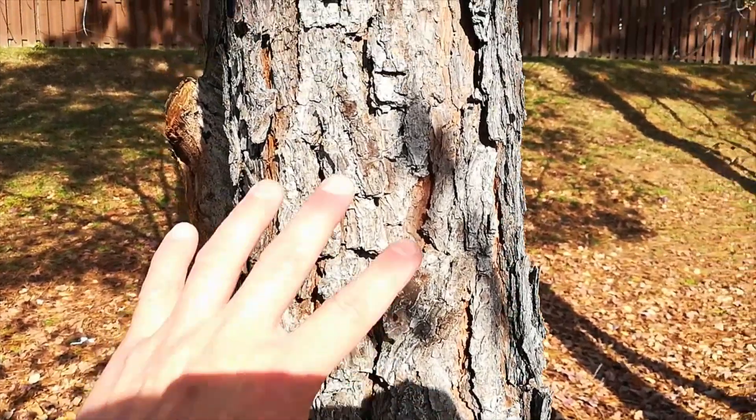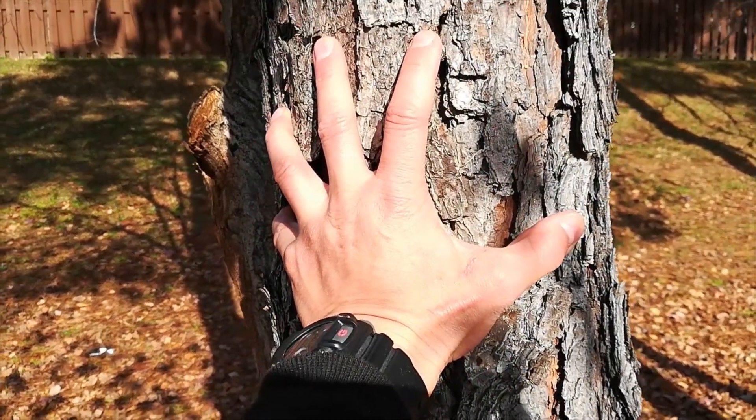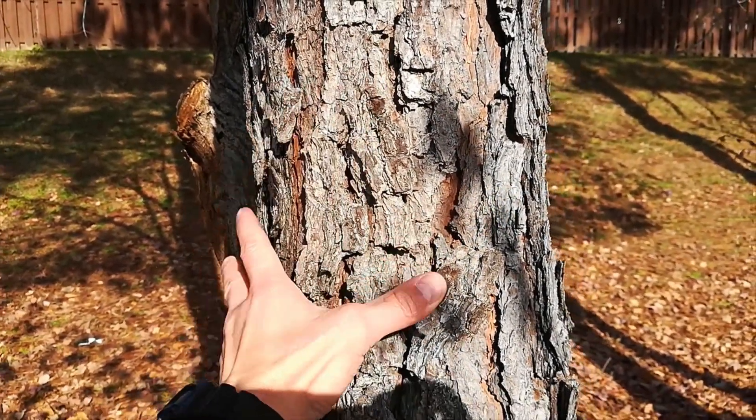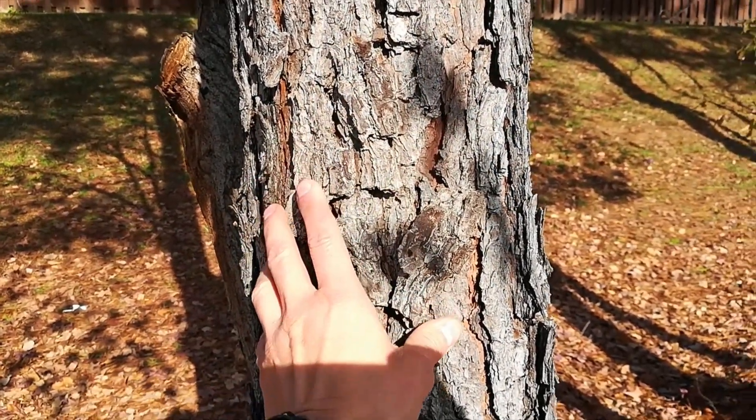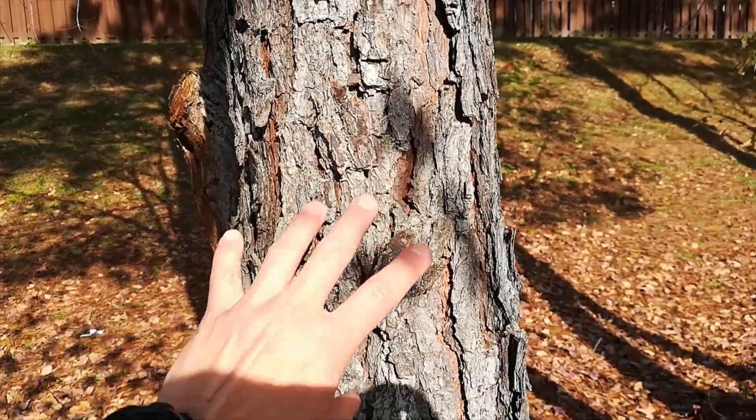Tree bark. If you touch a real tree, this is tactile texture. You can feel it and describe it. It's rough, dry, flaky. Tactile texture. You can touch it.